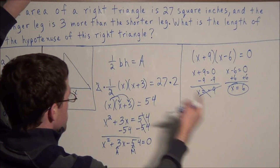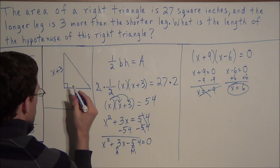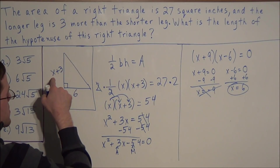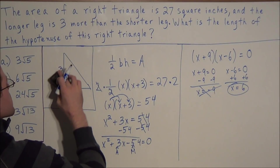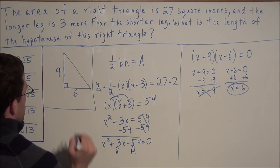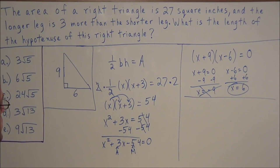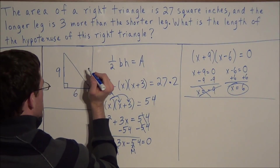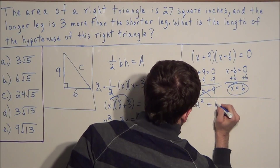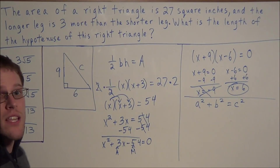We substitute x equals six back into the diagram. The shorter side is six, and the longer side is three more than the shorter leg, so six plus three equals nine. We replace the other leg with nine. The goal is to find the length of the hypotenuse, so we'll call the missing side c. In general, a squared plus b squared equals c squared, where a and b are the legs and c is the length of the hypotenuse.